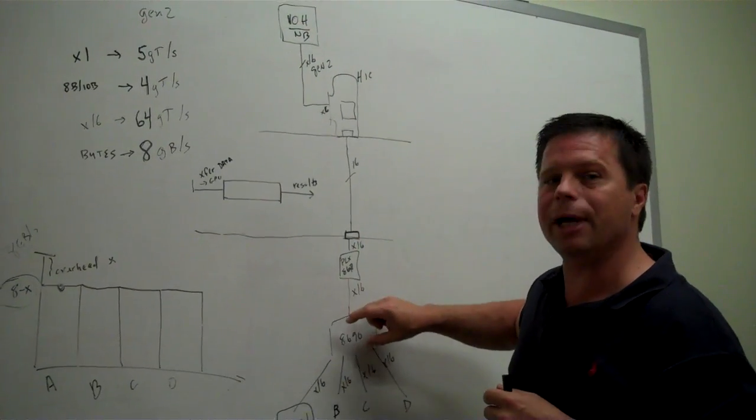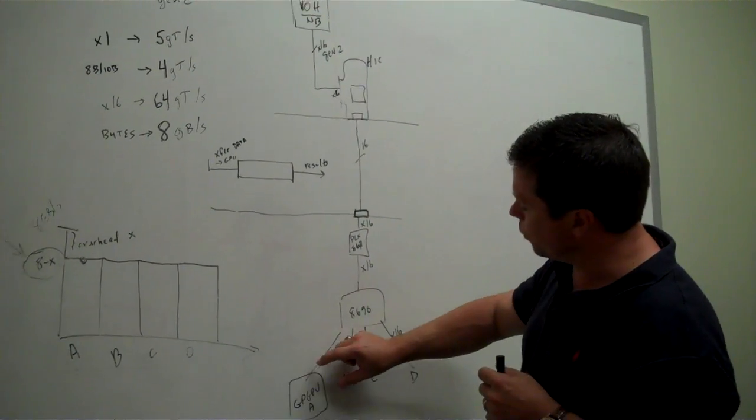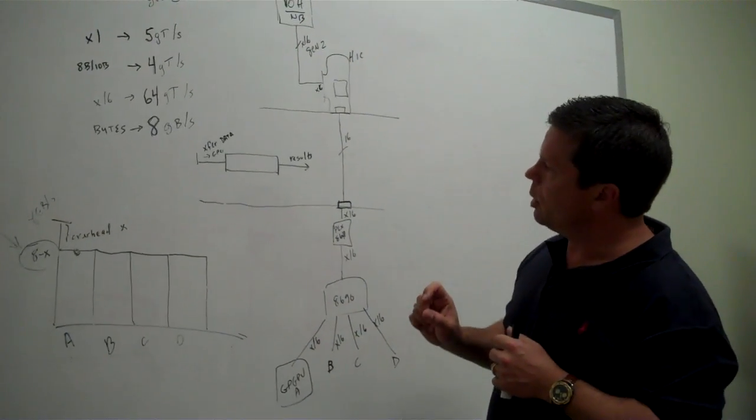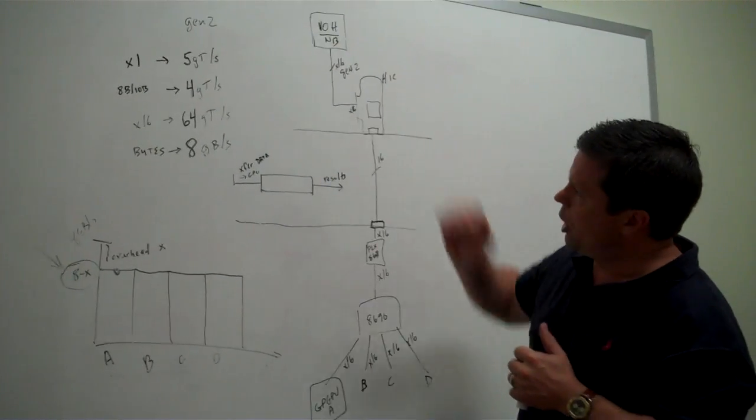I mean, that's a constant pipe diameter, if you will, all the way from the server down to the GPGPU. Again, Gen 2.